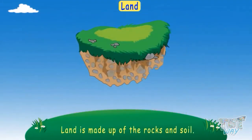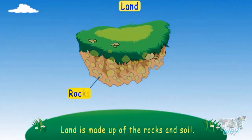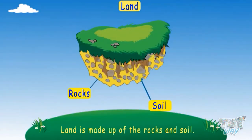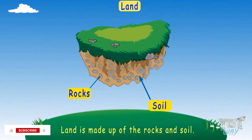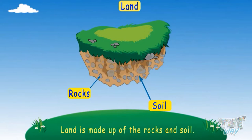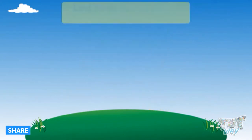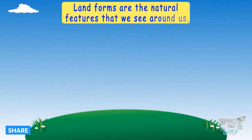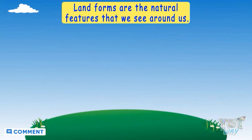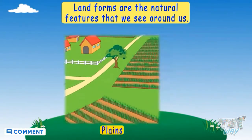The land is made up of rocks and soil. Now let's see different landforms. Landforms are the natural features that we see around us. Different landforms are plains, hills, mountains, water bodies, deserts, and valleys.